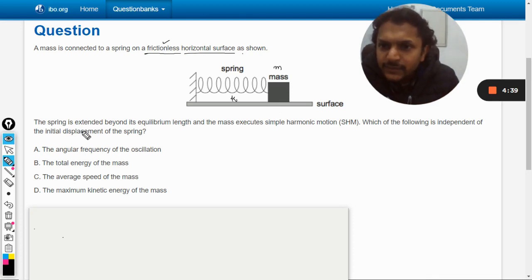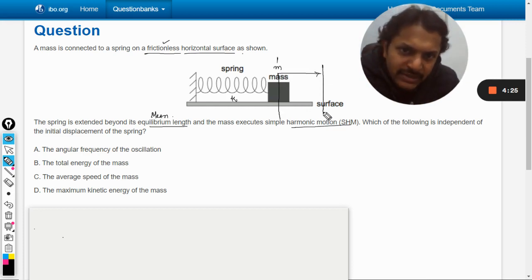The spring is extended beyond its equilibrium length—that is, the mean position. The mass executes simple harmonic motion. What is happening is this is the mean position, and the mass is now taken to some extreme position. The amplitude is, let us say, A or X naught, as it is denoted in IB. So this is the amplitude.